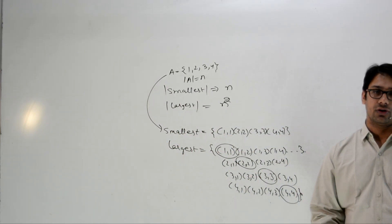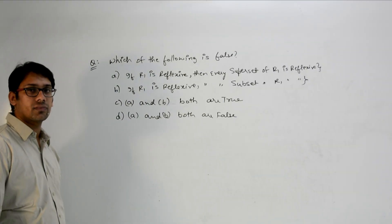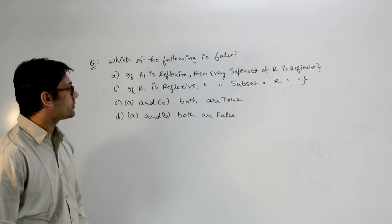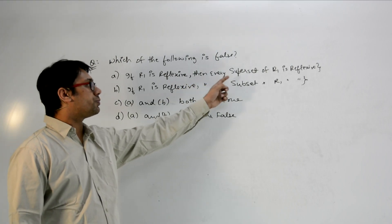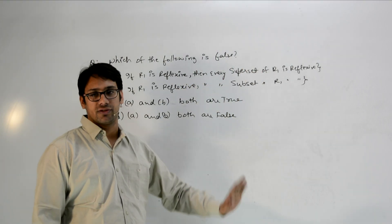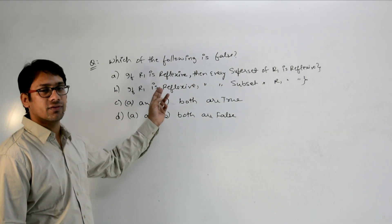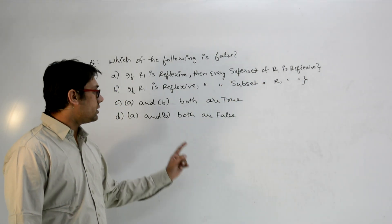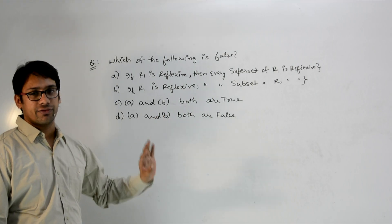Let me take one or two more questions on reflexive relations. Identify which of the following is correct: (A) If R1 is reflexive, then every superset of R1 is reflexive. (B) If R1 is reflexive, then every subset of R1 is reflexive. (C) A and B both are true. (D) A and B both are false.